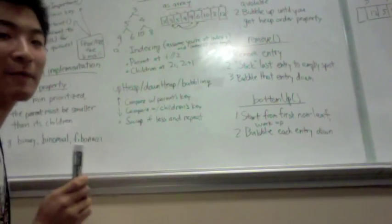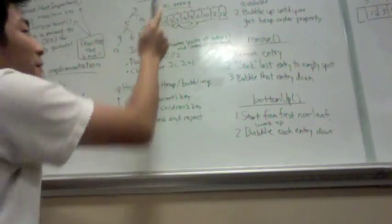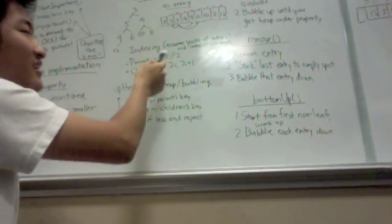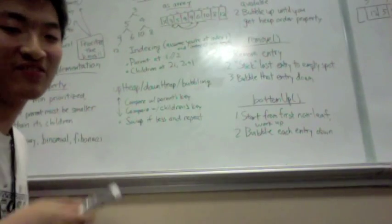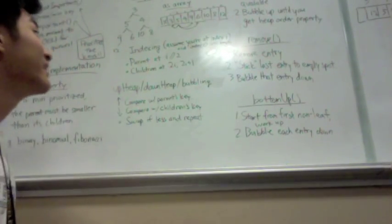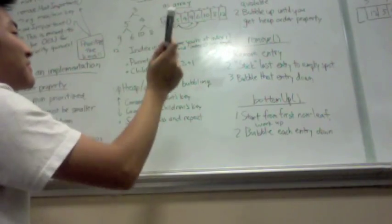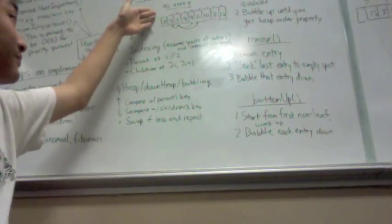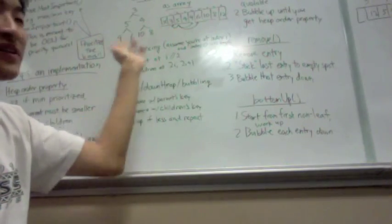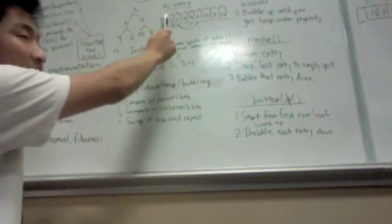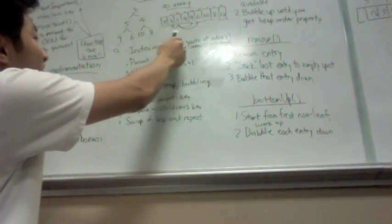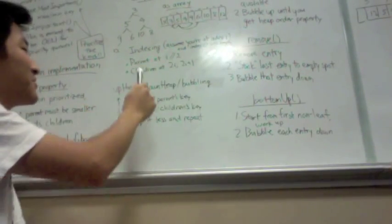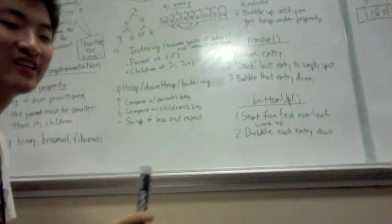The additional property for binary heaps is that it's a complete binary tree. Each level should be filled up before you add a new layer. You can have dangling stuff at the very bottom where you have your new layer. One interesting consequence of this property is that you can represent the binary heap as an array. And not only that, the array has special indexing properties. If you let the zeroth index be null and fill in everything else, then for any index i, your parent is at i/2, and your children are at 2i and 2i plus 1.